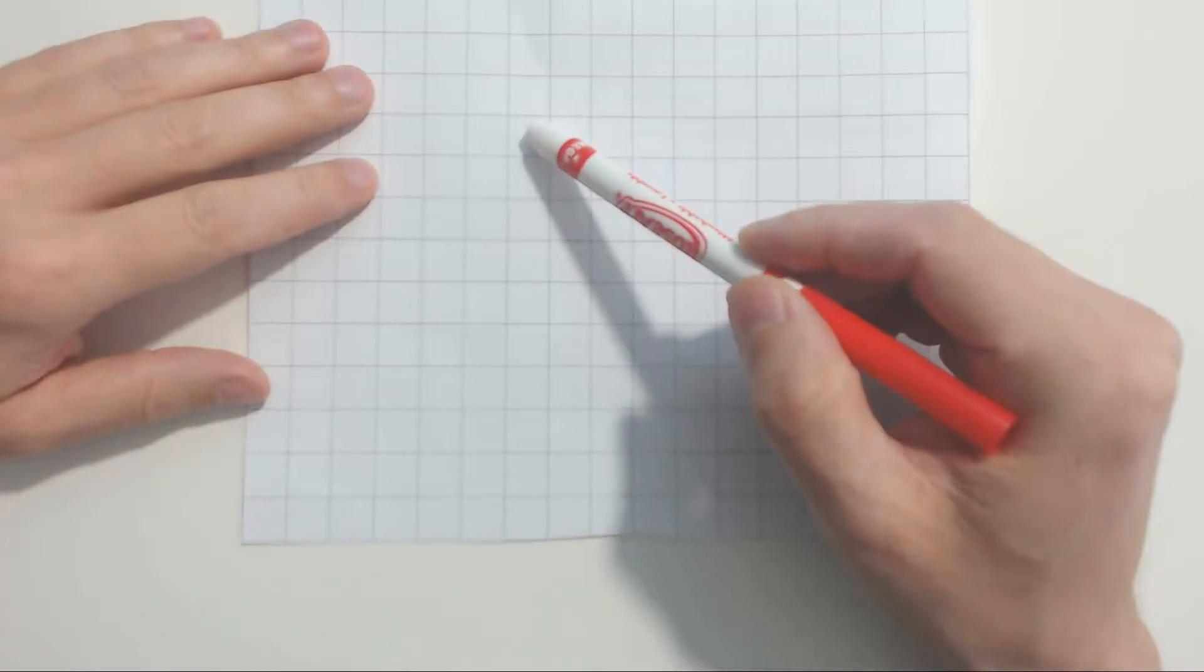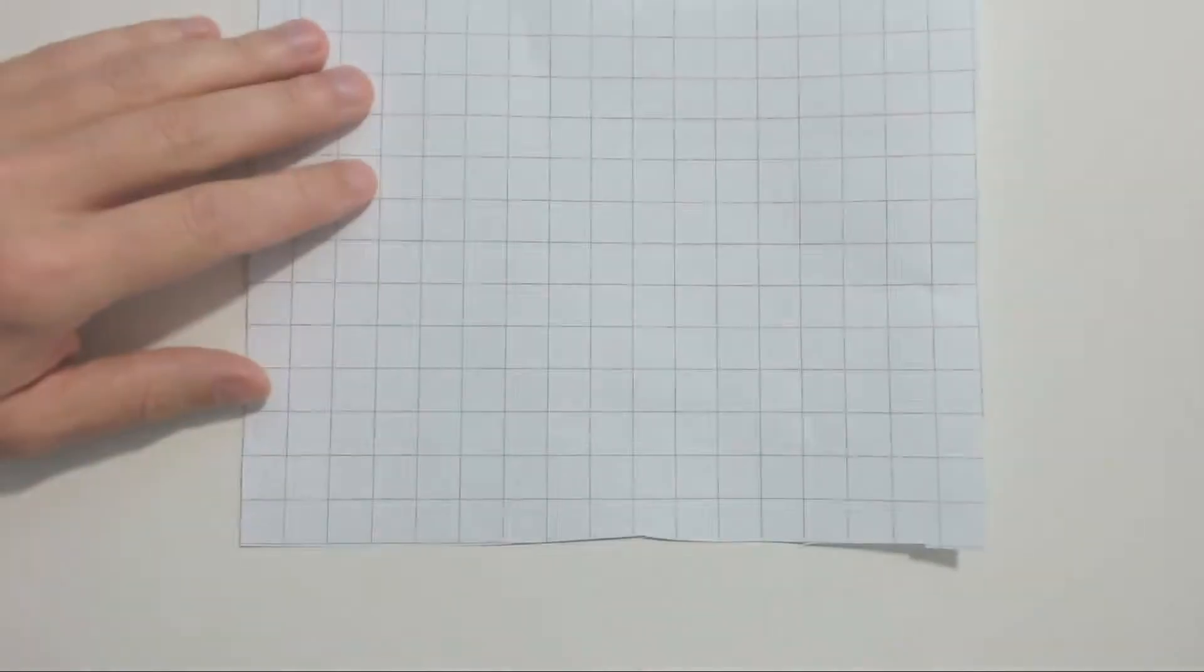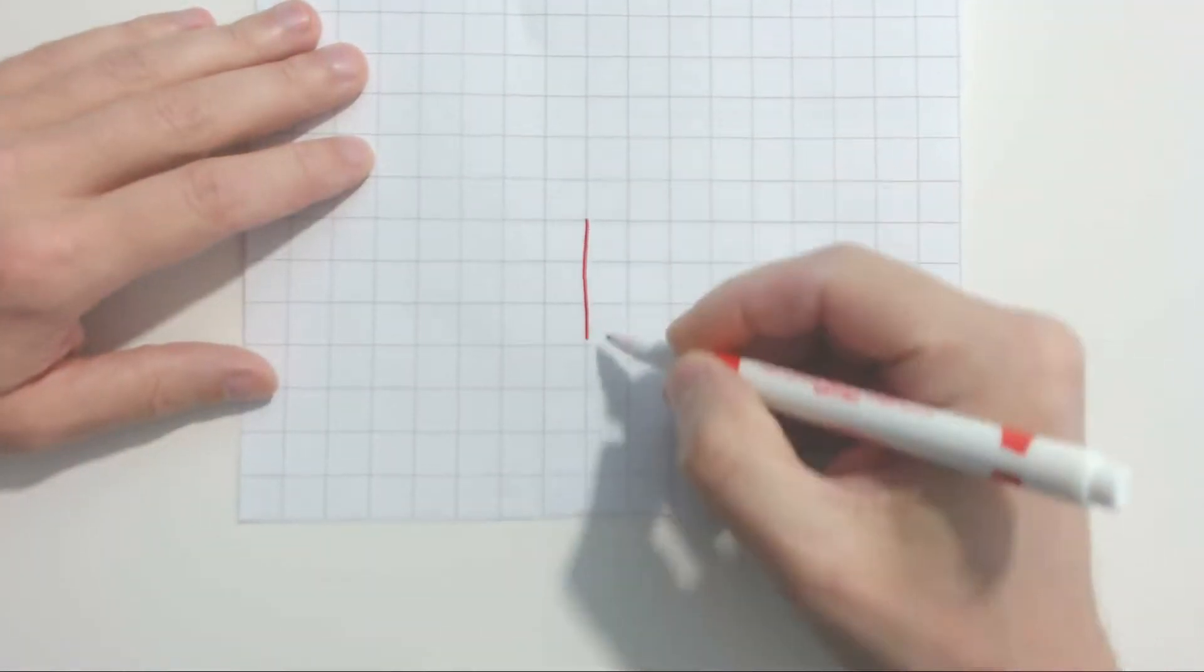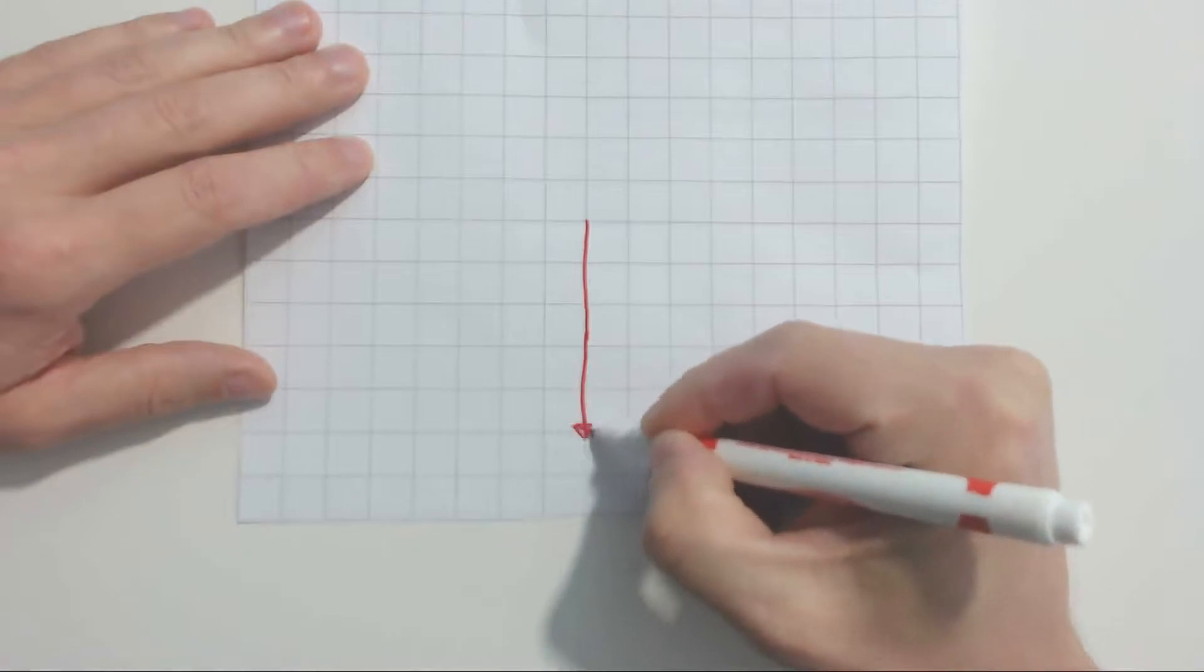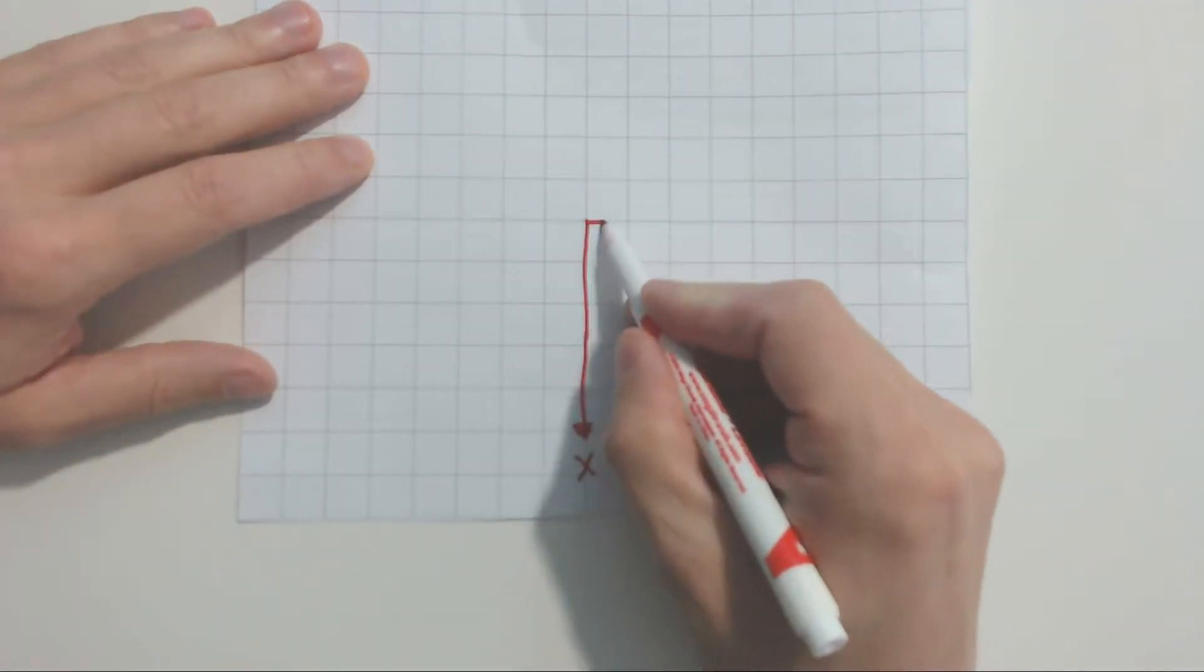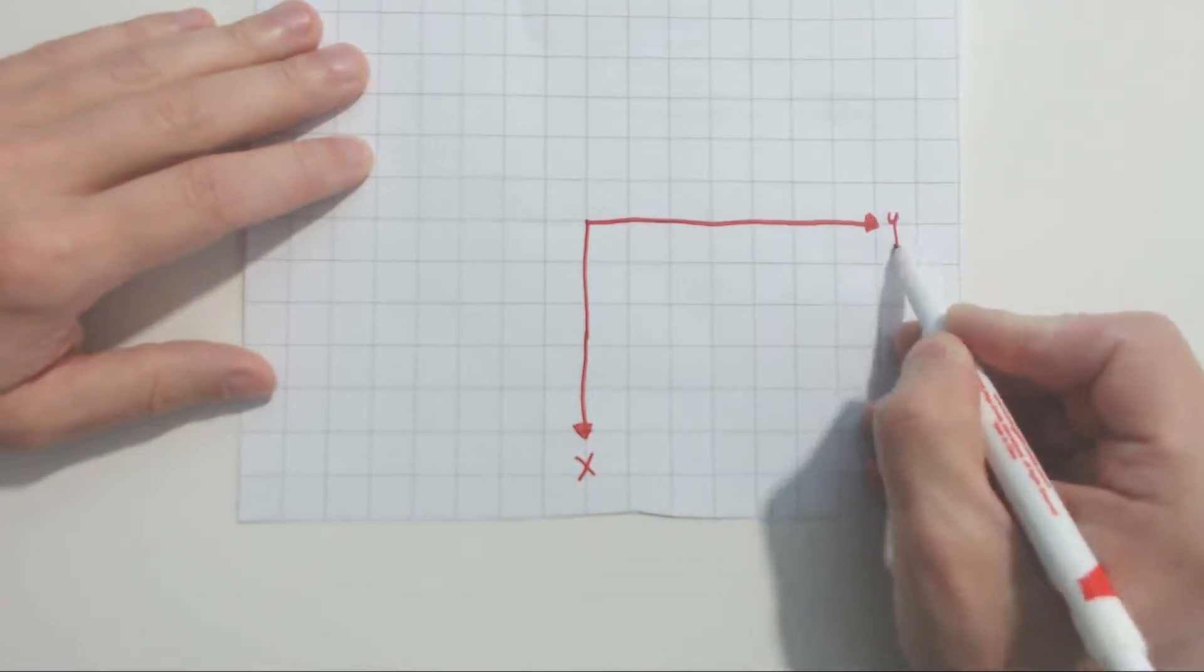So get yourself some grid paper kind of like this one. And then once you have that, mark some axes on it. I'm going to use red here for example. So I'm going to draw this axis right here and then put X in that position. Then after that, draw the Y axis. I'll mark that as Y right here.